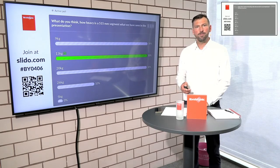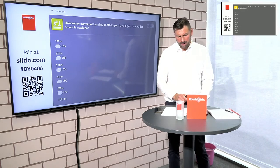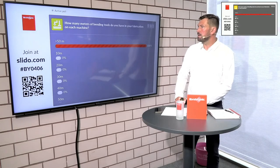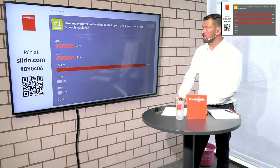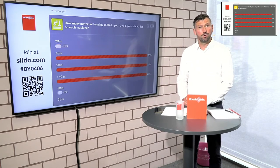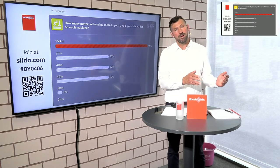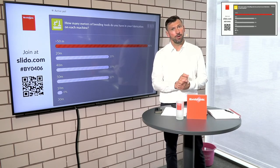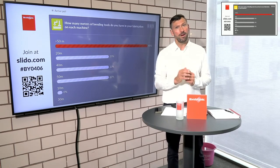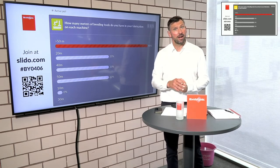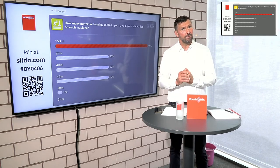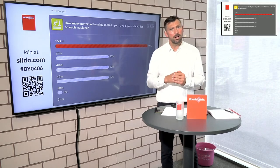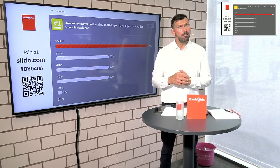Our last question: how many meters of bending tools do you have in your fabrication on each machine? Is it more than 50 meters, 10 meters, 20 meters, 30 meters, or 40 meters? When we launched the first generation tool changer, it had a capacity of 30 meters of upper and lower tooling. The second generation, which we launched last year, is the Modular Tool Changer which you can retrofit to every Expert Pro on the market — you just put it on like a trailer. The new solution has 40 meters capacity for a 3-meter machine.